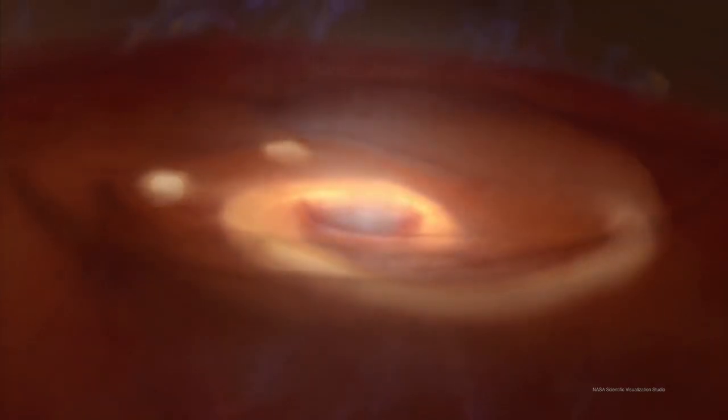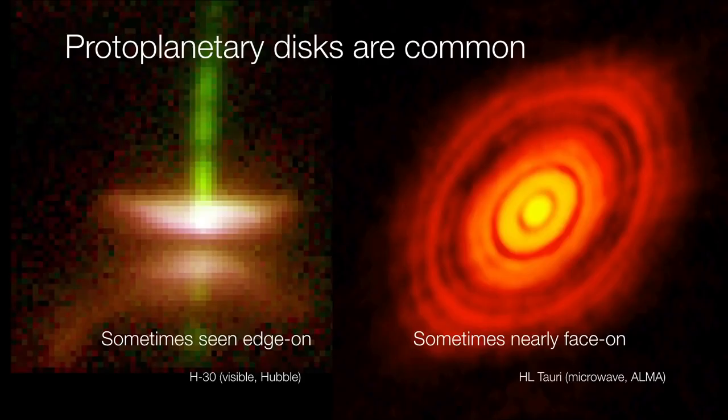And these protoplanetary disks are fairly common. Sometimes we see them edge-on, or sometimes we see them nearly face-on. But when seen at microwave wavelengths, as we have here on the right-hand side of our screen, you can make out the distinctive rings and spoke-like features of this disk. So this is significant because it means that there are protoplanets inside this protoplanetary disk that are beginning to sweep out the concentrations of gas and dust within their orbits.